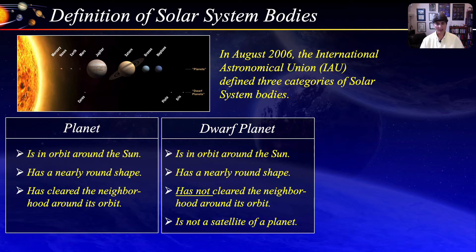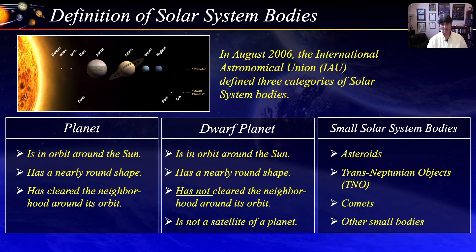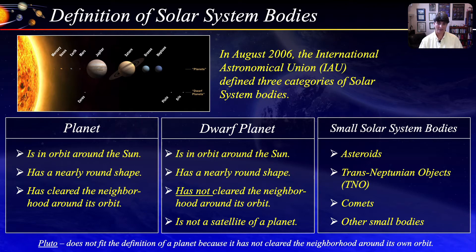There are currently five dwarf planets: Pluto, Ceres, Eris, Haumea, and Makemake. But other known bodies might be reclassified as dwarf planets in the near future. All other objects, except satellites orbiting the sun, are referred to collectively as small solar system bodies. These objects currently include asteroids, most trans-Neptunian objects, comets, and other small bodies. Now Pluto does not qualify as a planet because it has not cleared the neighborhood of its own orbit. Pluto is now classified as a dwarf planet and is recognized as the prototype of a new category of trans-Neptunian objects. In a few slides, we'll see how Pluto really doesn't fit with the other planets.